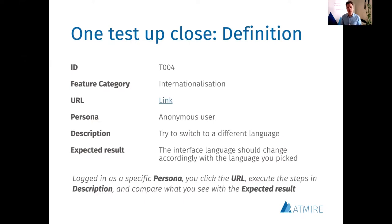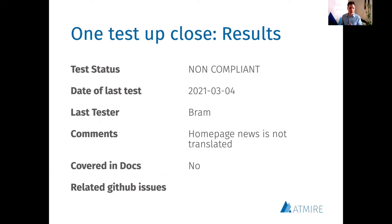Let's now look at the next columns that you can use to record your test results. When you fill out the test results for a test, the first three columns are mandatory. You pick the most appropriate test status — for example, OK or non-compliant. Then you record the date and your name. Optionally, you can provide more explanation in the comments column. In this case, to clarify why I've put the test to non-compliant, I stated that the central text on the homepage — the homepage news — didn't get translated when I switched the language.